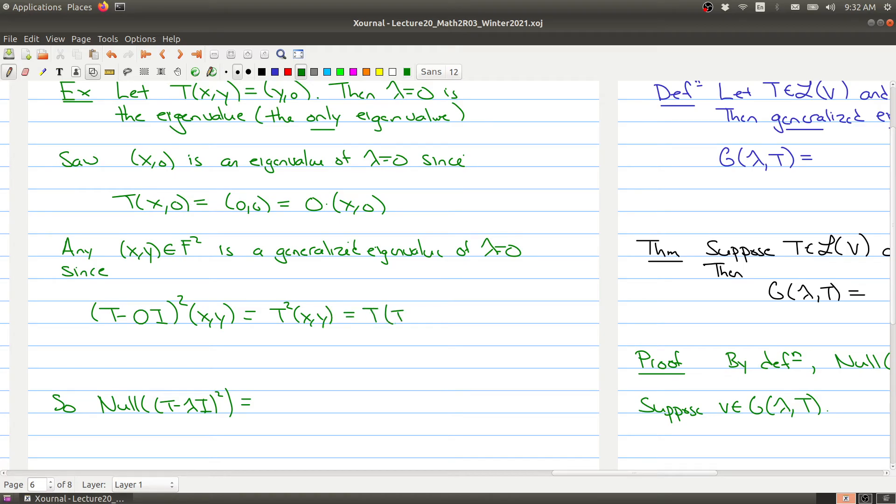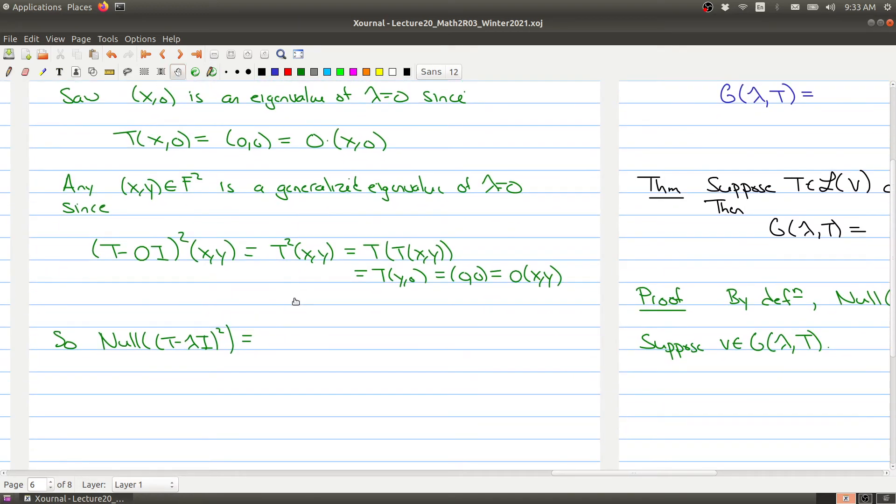this is just the same thing as T²(x,y). We're doing T evaluated at T evaluated at (x,y). The first time we apply the operator T to (x,y), we get T(y,0). When we apply it again, we get (0,0), which is zero times the vector we started with. So any vector is a generalized eigenvector.